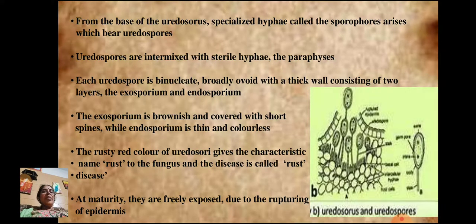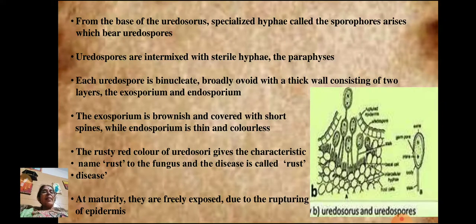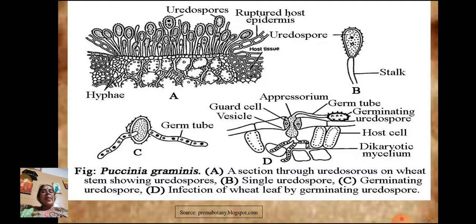Each uredospore is binucleate and broadly ovoid with a thick wall consisting of two layers: the outer exosporium and the inner endosporium. The exosporium is brownish in color and covered with short spines, while the endosporium is thin and colorless. The rusty-red color of the uredosori gives the characteristic name 'rust' to the fungus and the disease. At maturity, they are freely exposed due to rupturing of the epidermis.